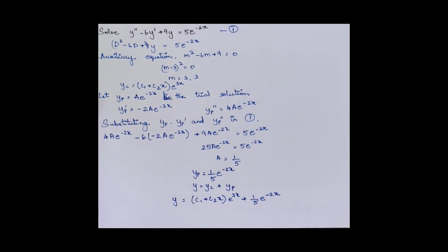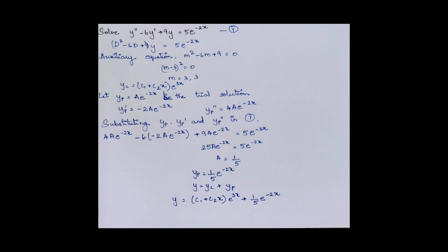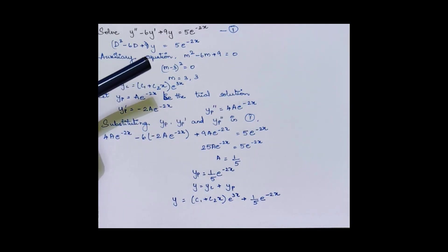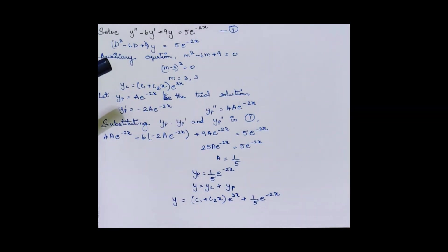Let's solve a question. The equation is y'' - 6y' + 9y = 5e^(-2x). Since the right-hand side is not equal to zero, this is a non-homogeneous equation, and the solution is given by the sum of the complementary function and particular integral. To find the complementary function, we substitute D and then m in place of D to obtain the auxiliary equation. The roots are real and equal. Based on the format (c1 + c2·x)·e^(mx), we substitute the value of m to obtain the complementary function.